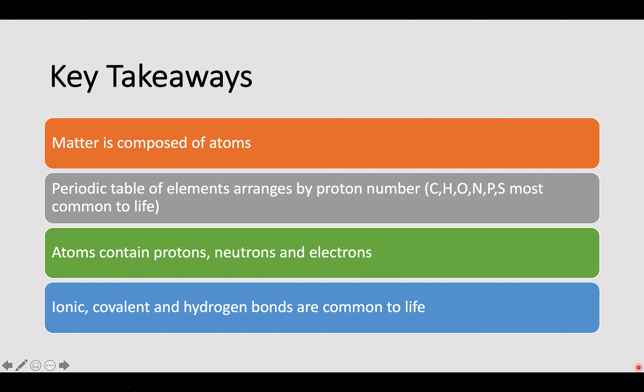Our key takeaways: matter is composed of atoms; the periodic table arranges elements by proton number; CHOMPS — carbon, hydrogen, oxygen, nitrogen, phosphorus, sulfur — are the most common elements to life; atoms contain protons, neutrons, and electrons, and pay attention to where those are found; ionic, covalent, and hydrogen bonds are common to life; ionic and covalent bonds are stronger, while hydrogen bonds are normally weaker. That's the end of your second PowerPoint. I will see you in the next one.